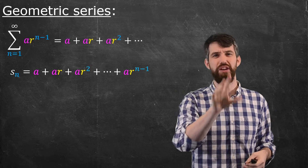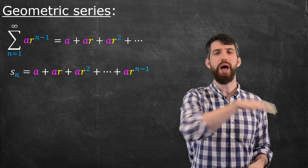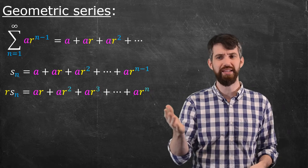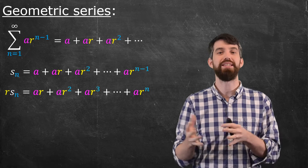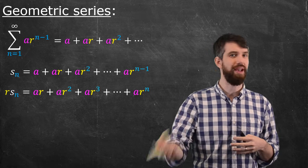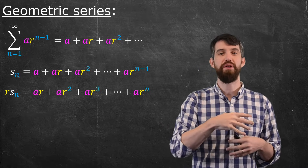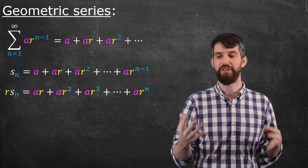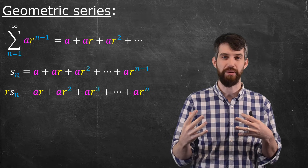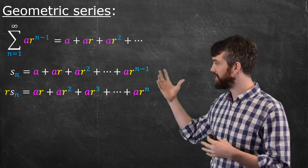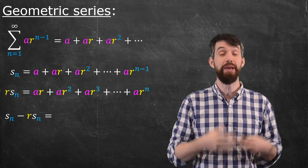Now I'm going to perform a little algebraic trick. Let me take s_n and multiply r by it — let me consider r times s_n. So a turns into a times r, ar turns into a times r squared, all the way along. The final term is ar to the n. Now I've got s_n and r times it, and let me take the difference.